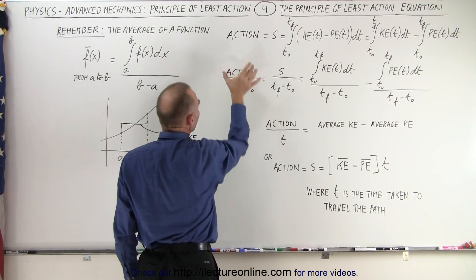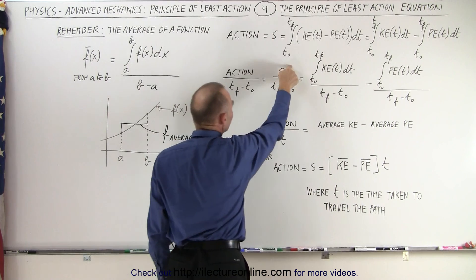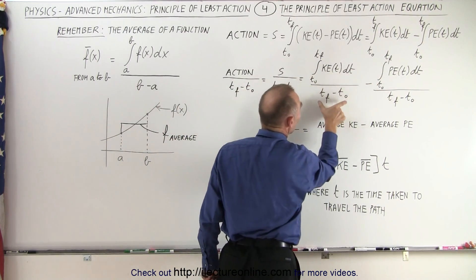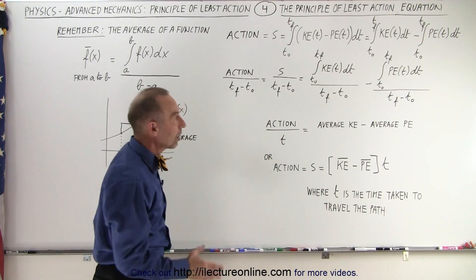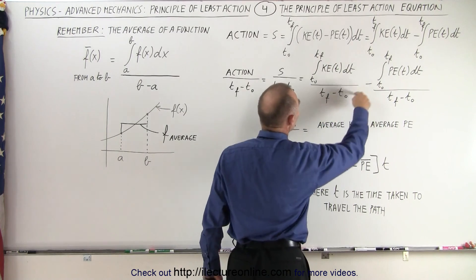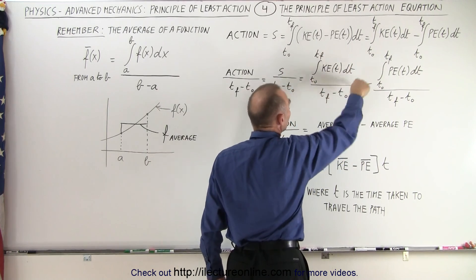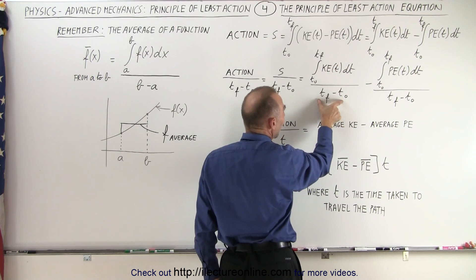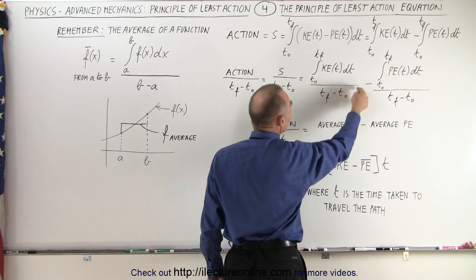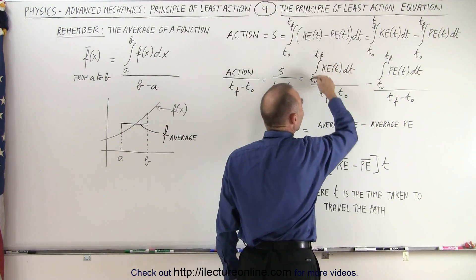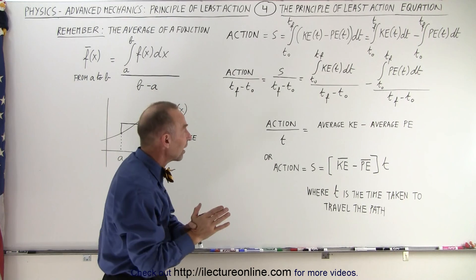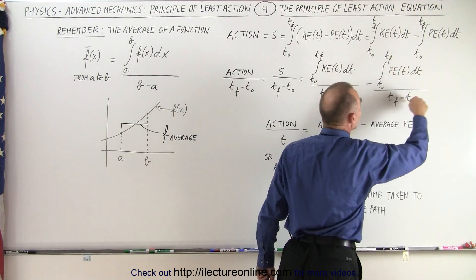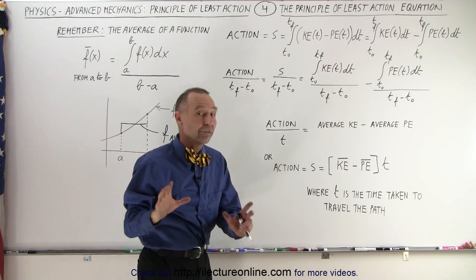If we take the action and divide it by the time interval, that is equal to S divided by the time interval. We divide each of the two integrals by the time duration of travel along the path. This integral divided by the time it took to travel the path gives us the average value of the kinetic energy. And likewise, this gives us the average value of the potential energy as a function of time.